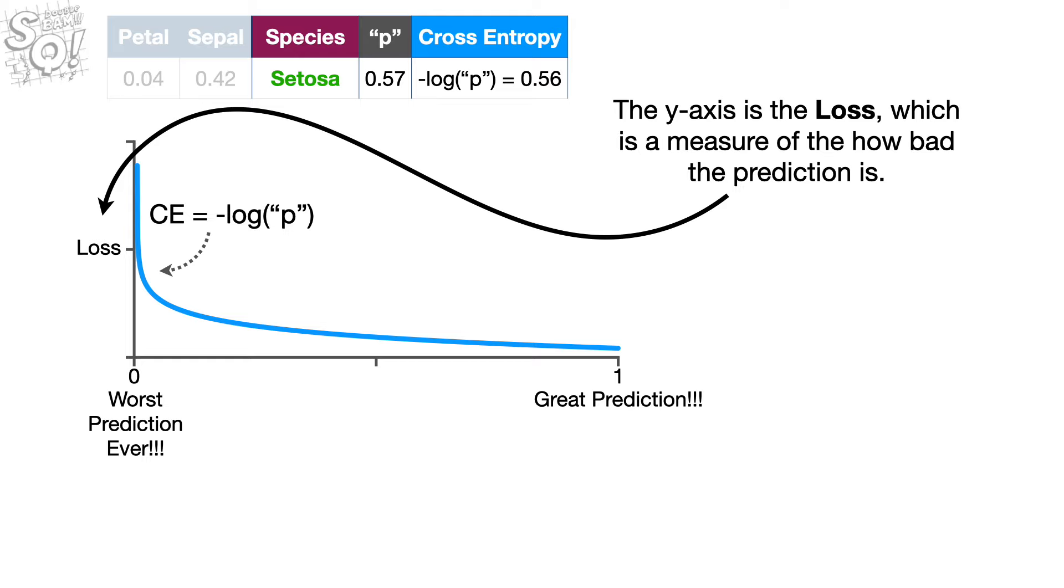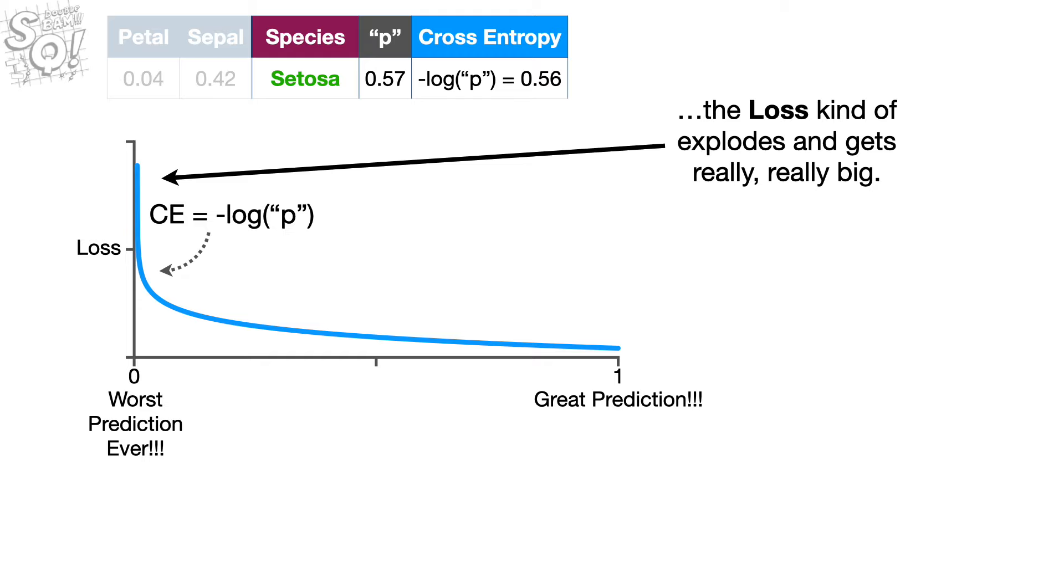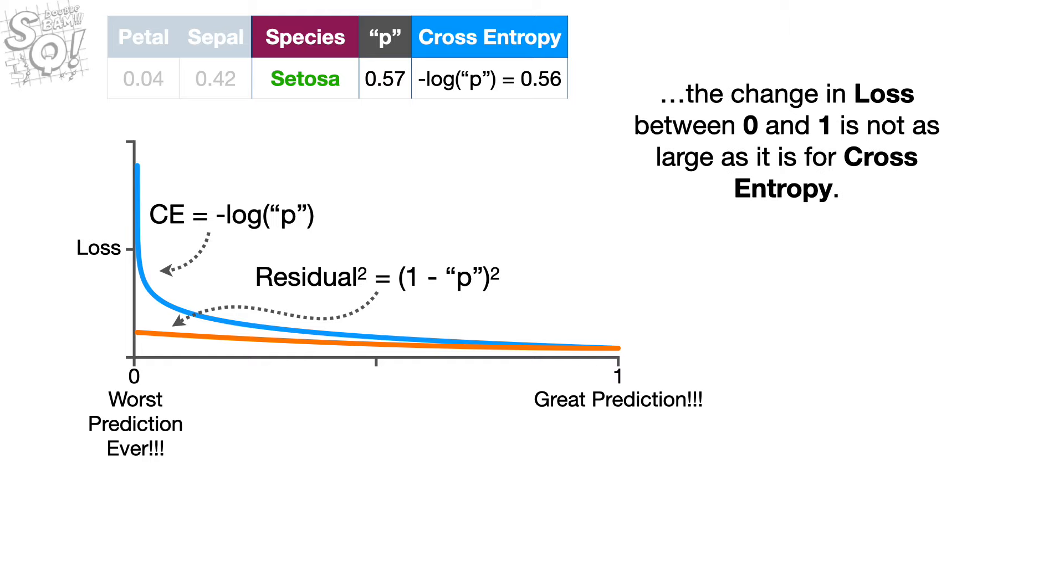The y-axis is the loss, which is a measure of how bad the prediction is. When we use cross-entropy, as the prediction gets worse and worse, the loss kind of explodes and gets really, really big. In contrast, if we plug in values for the predicted probability from 0 to 1 into the squared residual, then the change in loss between 0 and 1 is not as large as it is for cross-entropy.